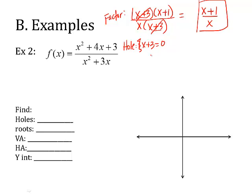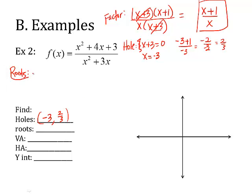But first, let's finish our hole. So x equals negative 3. If x is negative 3, we plug it into the equation: negative 3 plus 1 over negative 3 gives me negative 2 over negative 3, which is 2 thirds. So my coordinate is negative 3 and positive 2 thirds. Let's do roots — roots is just the numerator set equal to 0. So x plus 1 equals 0, meaning x is negative 1. Ordered pair: negative 1, 0.